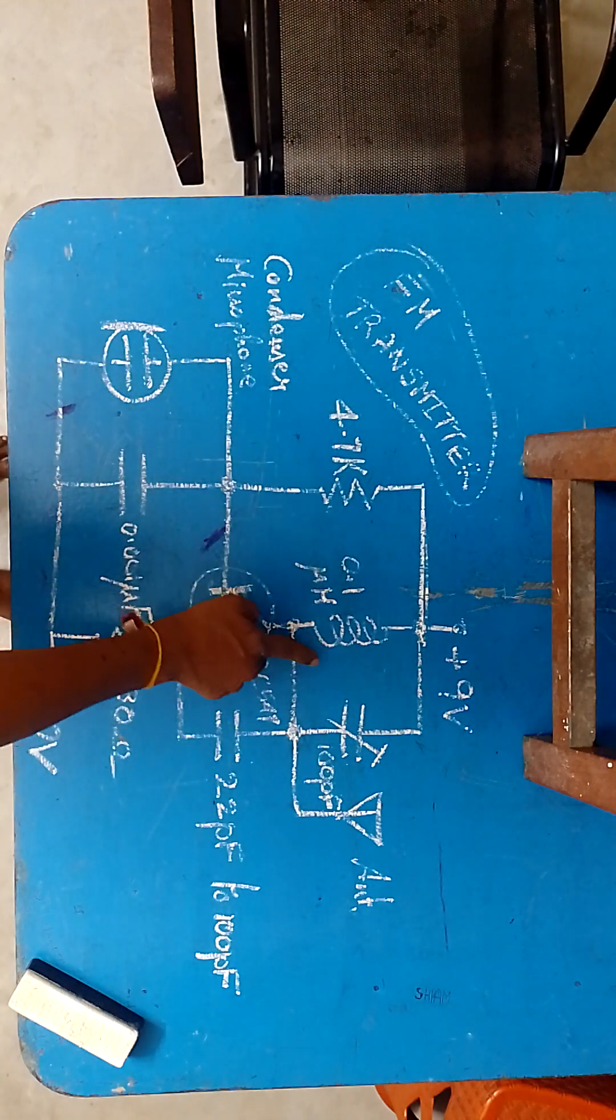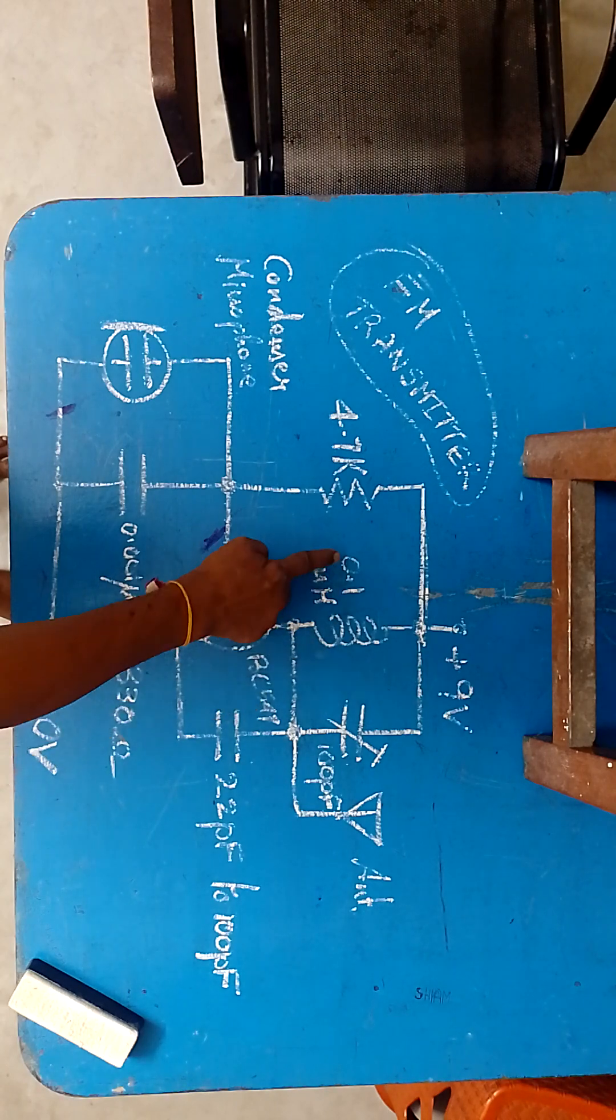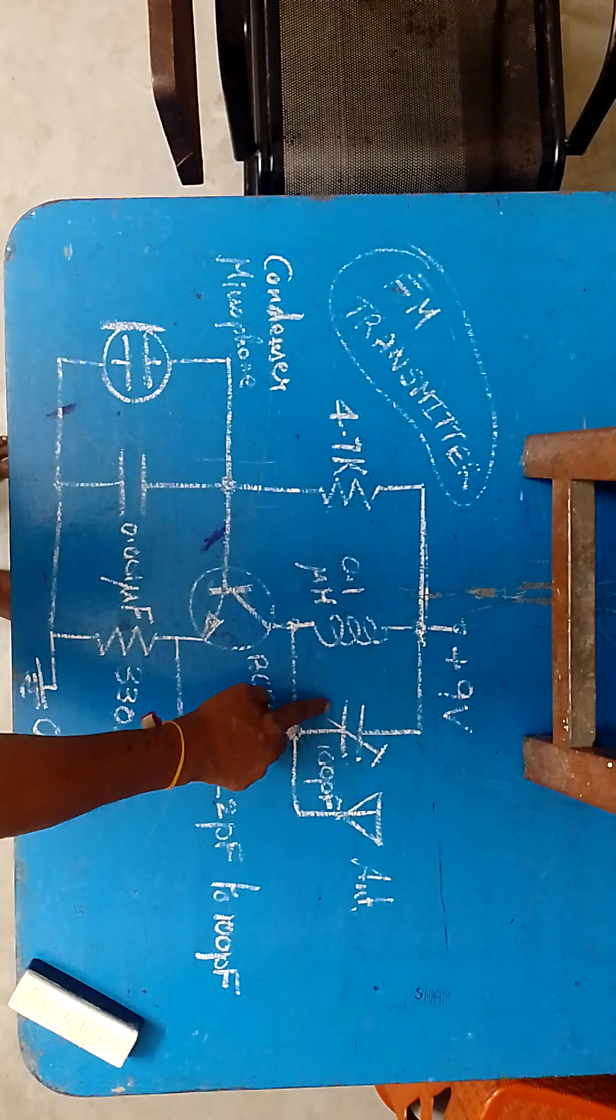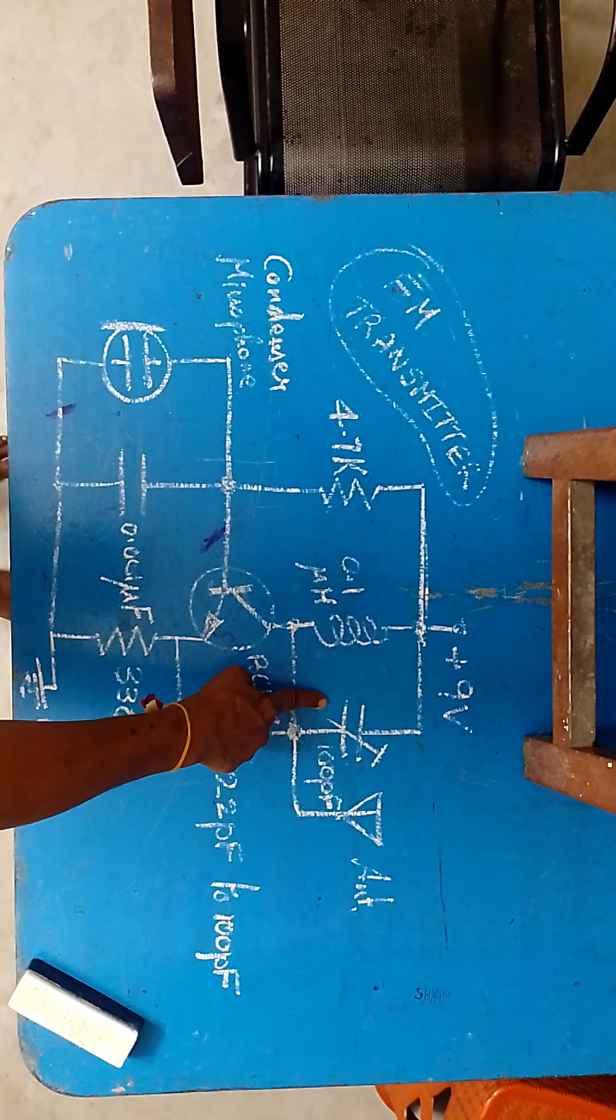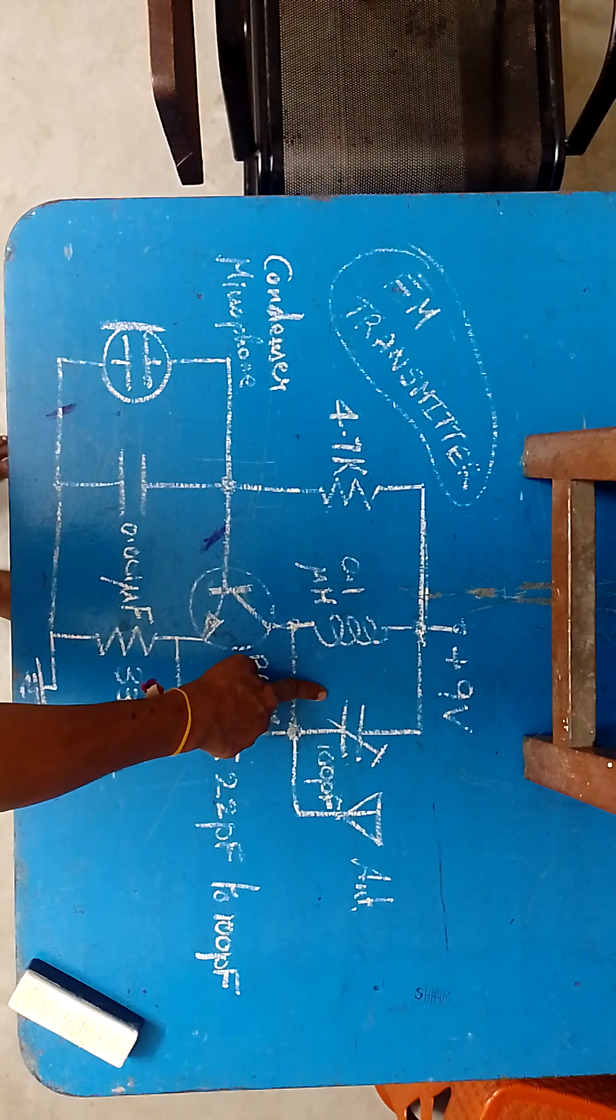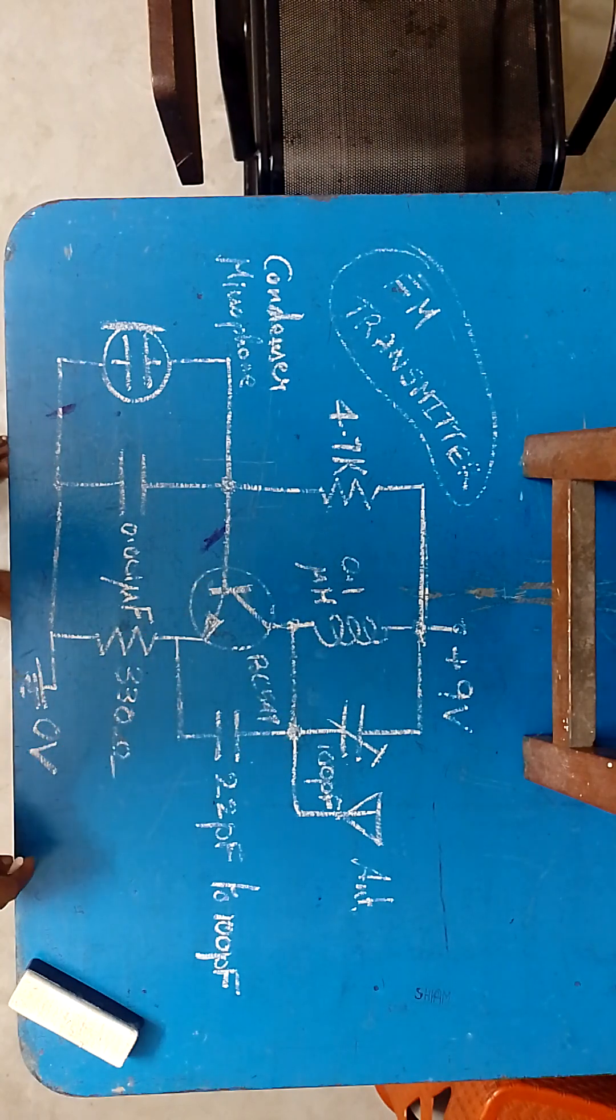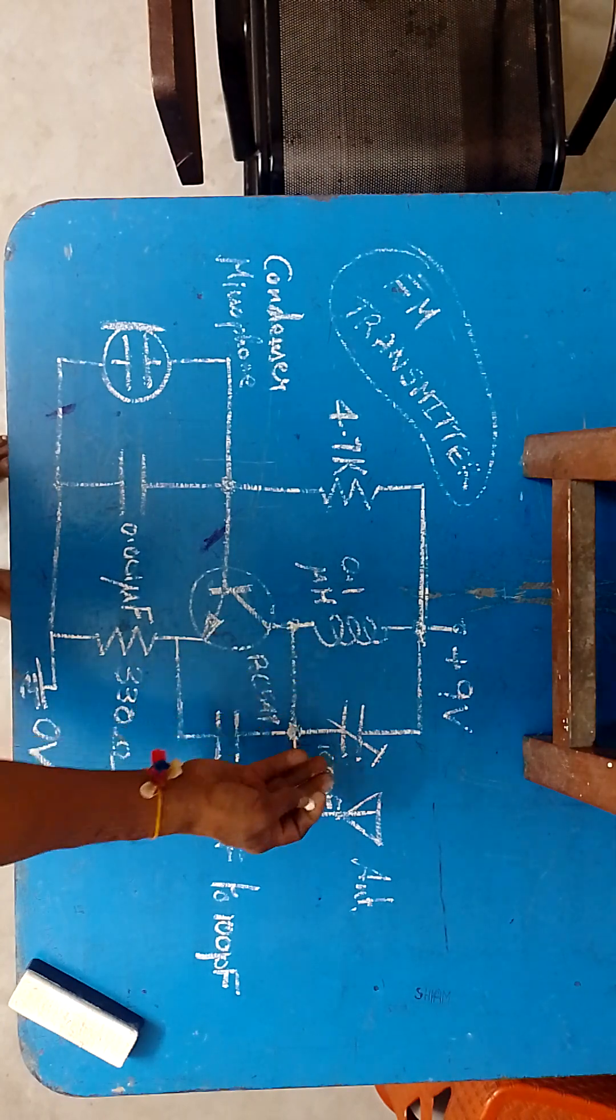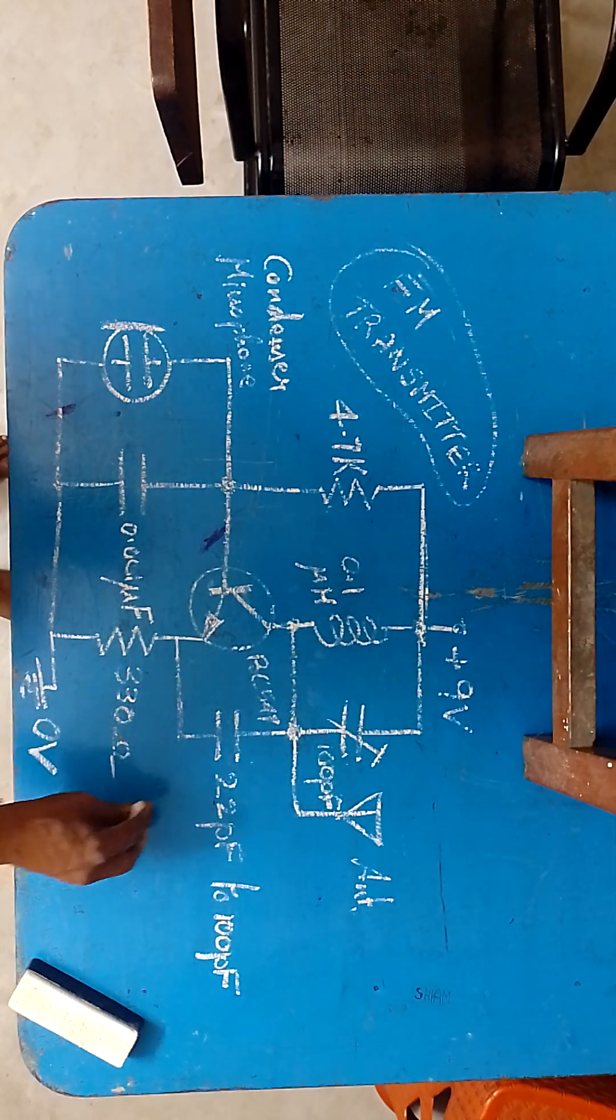The value of the inductance is 0.1 micro henry, fixed value. Whereas this is a trimmer capacitor, it varies from 0 to 100 pico farad to tune into frequencies ranging from 88 megahertz to 108 megahertz.